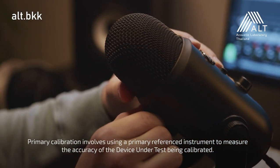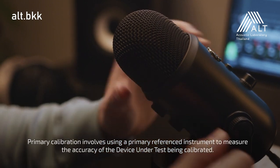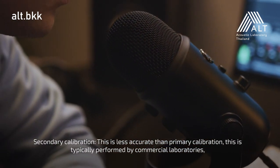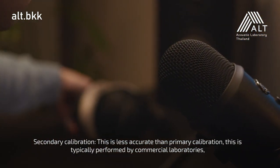Primary calibration involves using a primary reference instrument to measure the accuracy of the device being calibrated. Secondary calibration is less accurate than primary calibration.